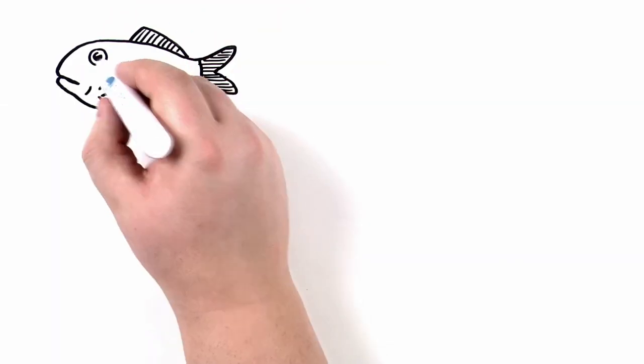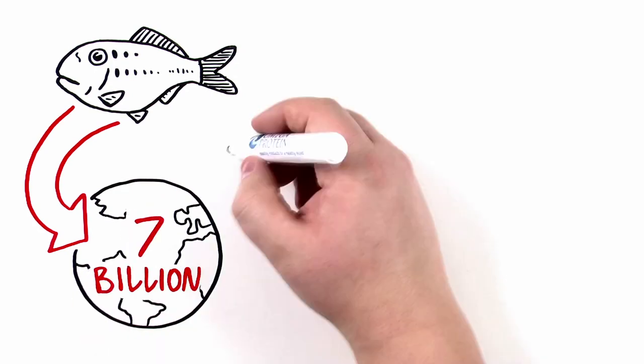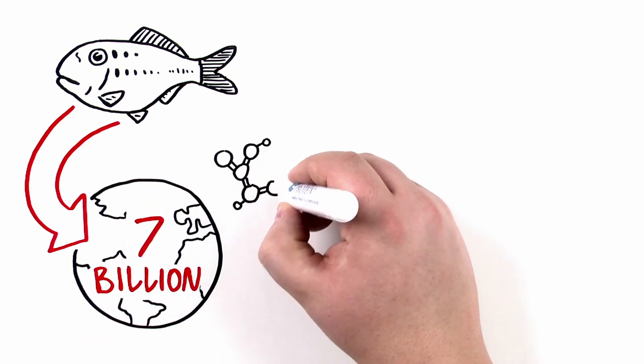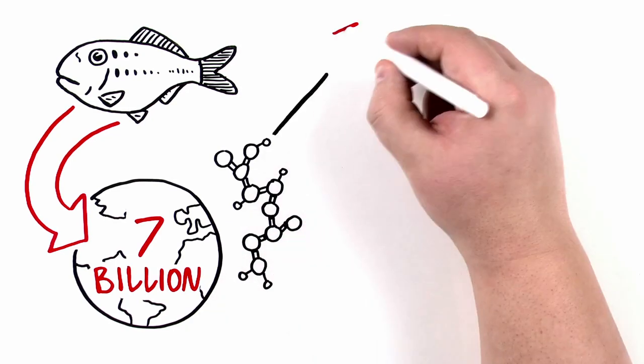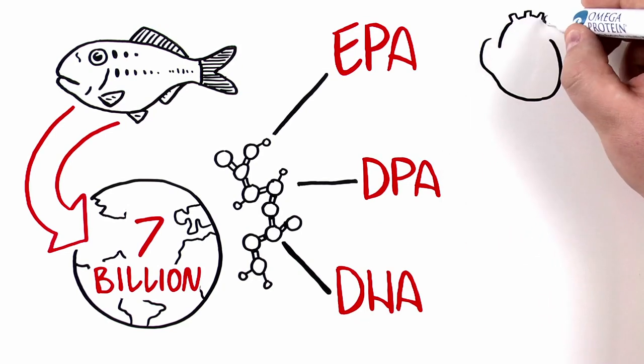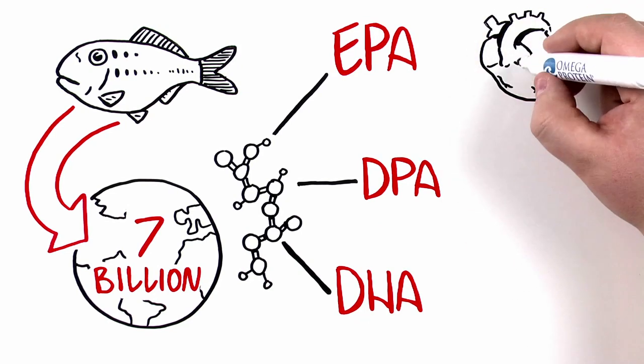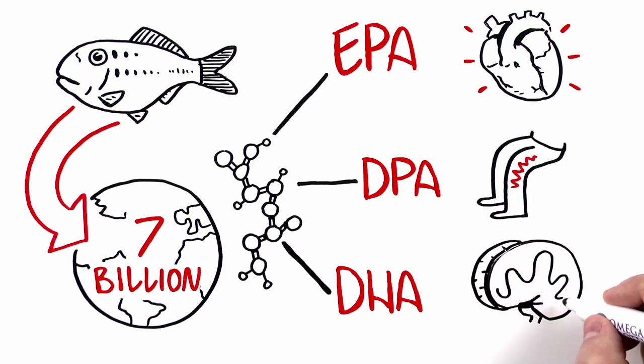Fish provide wholesome nutrition to the planet's 7 billion residents. Perhaps most importantly, fish serve as a source of marine long-chain omega-3s like EPA, DPA, and DHA. These omega-3s are demonstrably linked to cardiovascular health, reduced inflammation, and brain development and function in humans.